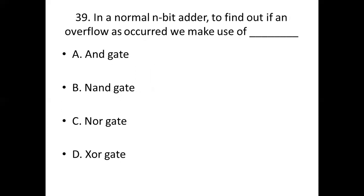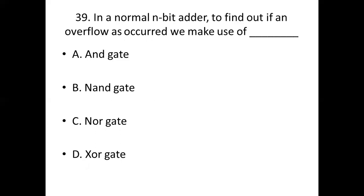Question 39: In a normal n-bit adder, to find out if an overflow has occurred, we make use of? Option A: AND gate. Option B: NAND gate. Option C: OR gate. Option D: EXOR gate. Answer: Option D — EXOR gate.